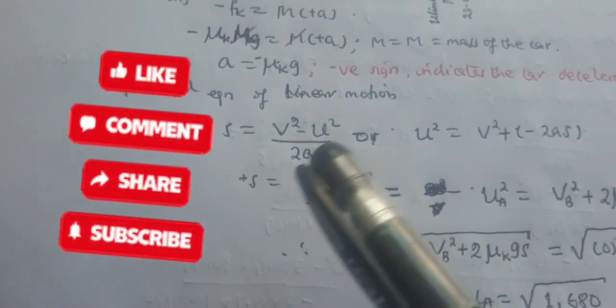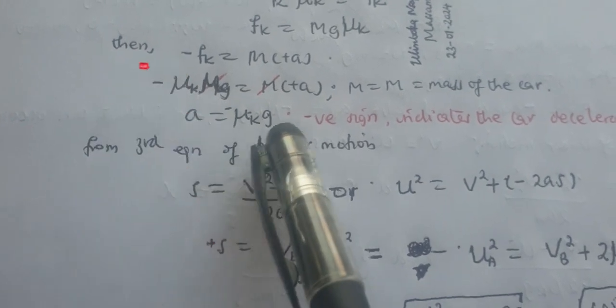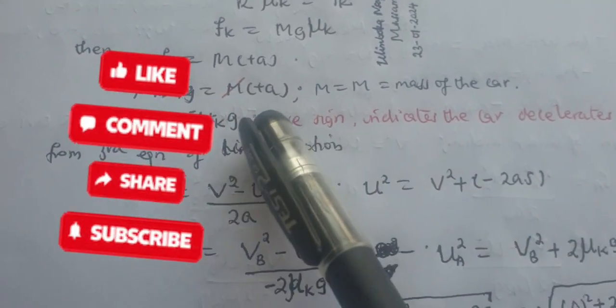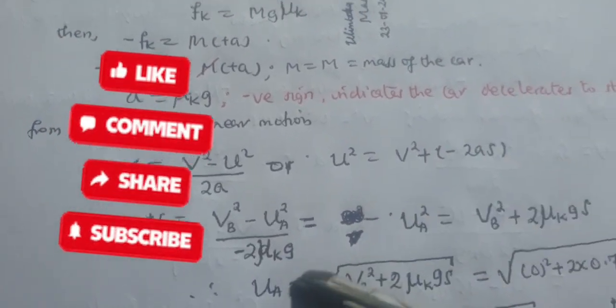When we get this value of acceleration as negative μk times g, the negative sign indicates that the car decelerates to stop with a uniform initial velocity.